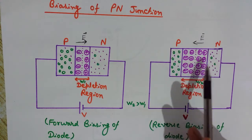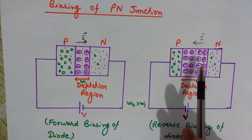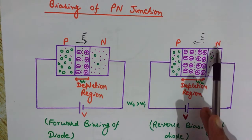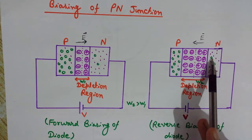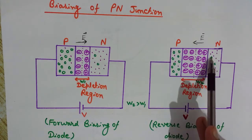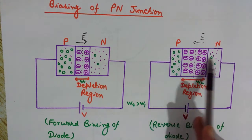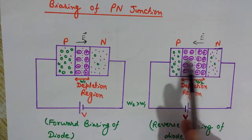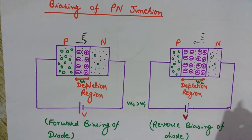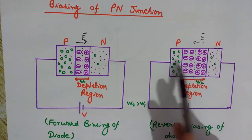A small reverse saturation current flows through the diode in this case because some minority charge carriers are present. On the N side there are a few holes, and on the P side there are some minority electrons. These electrons and holes move towards each other, giving us a small current — this is known as the reverse saturation current.